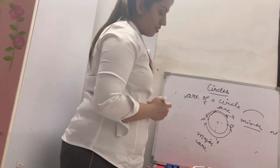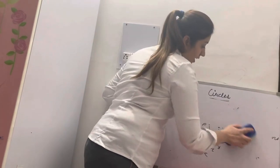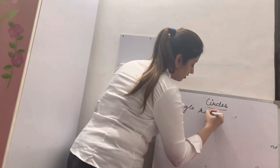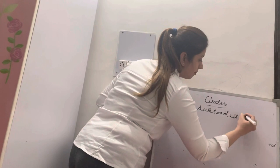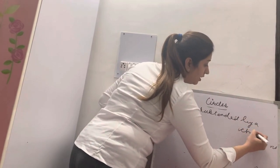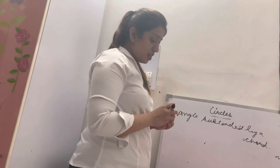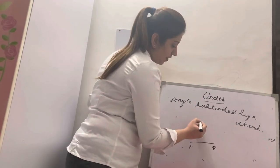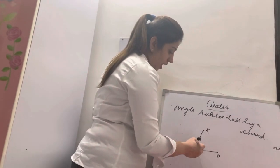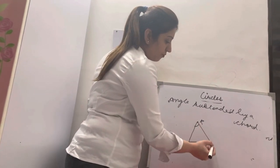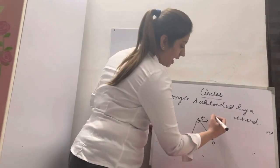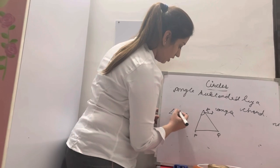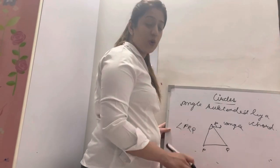Next comes the angle subtended by a chord. If I have a chord PQ and a point R, and I join R to P and R to Q, the angle formed at R with the chord PQ is the angle subtended by chord PQ at point R. That means angle PRQ is the angle subtended by chord PQ.